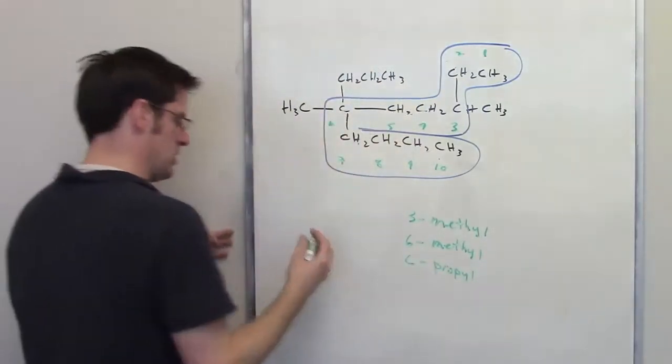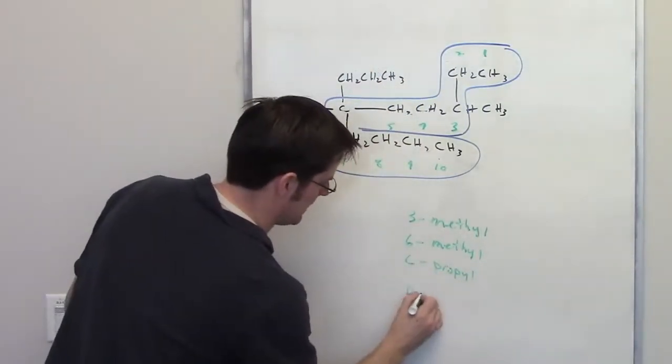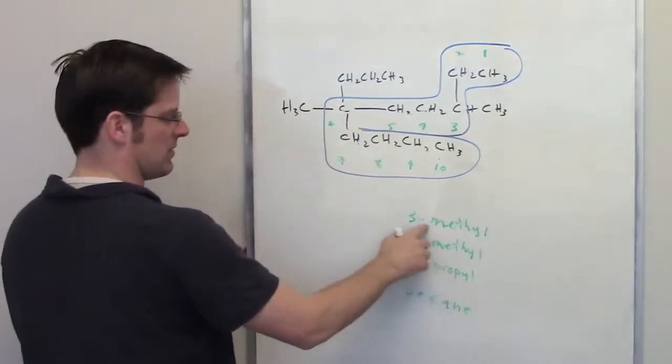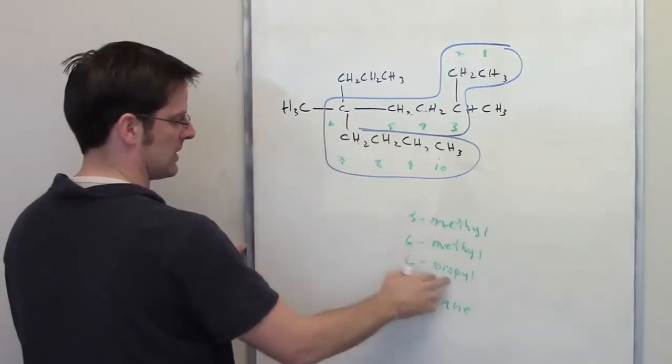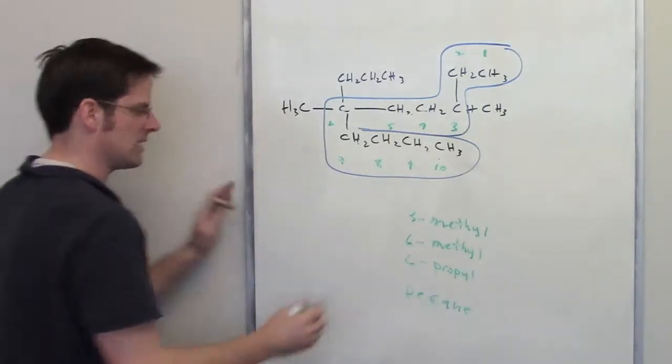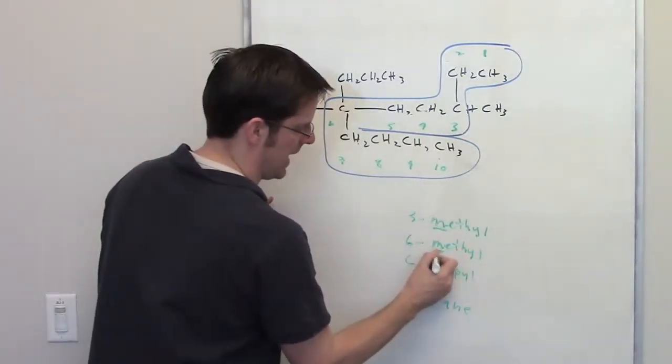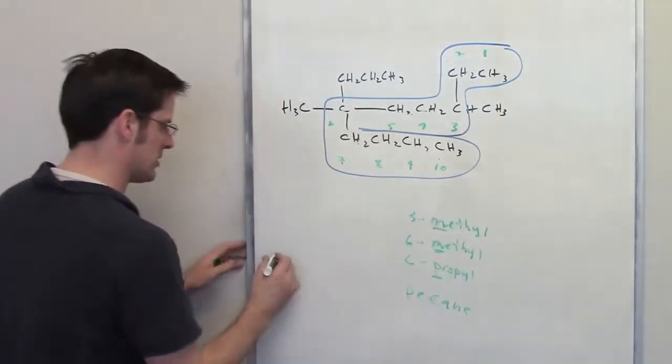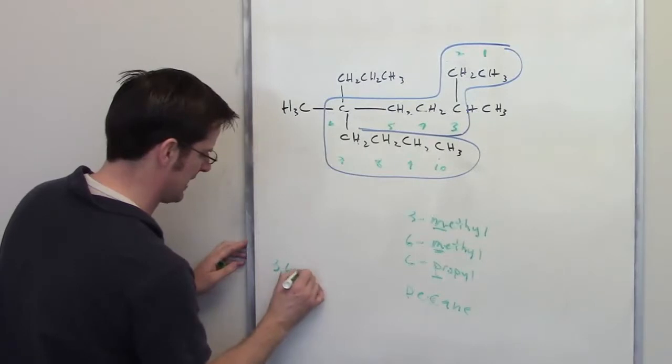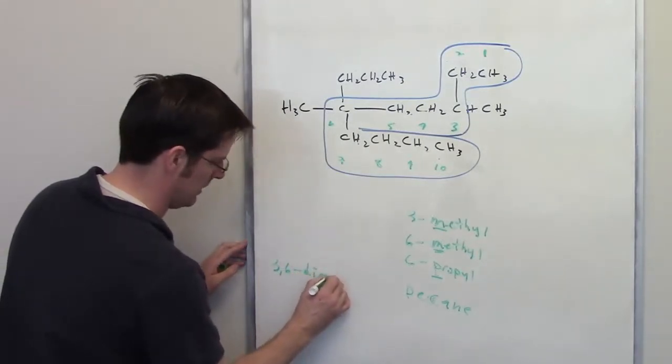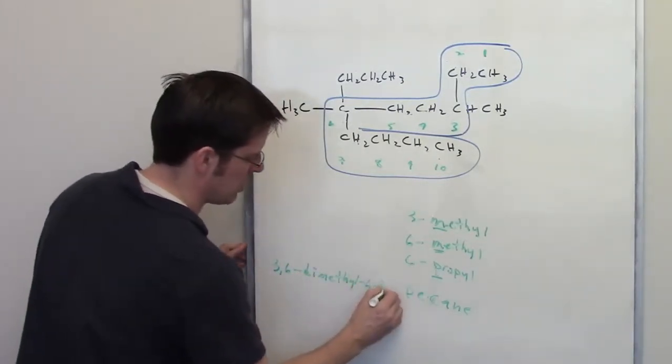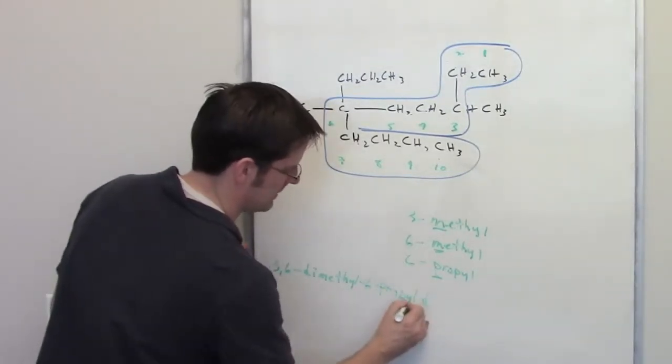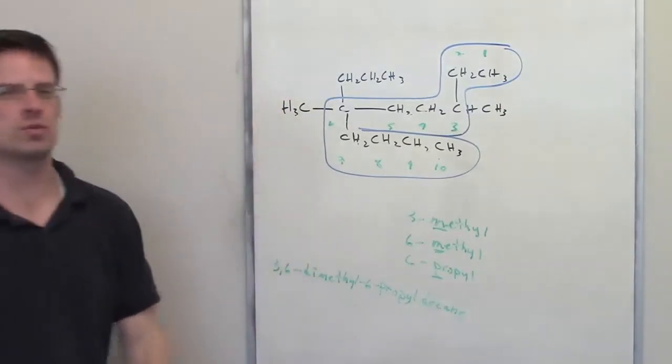Based then off of this molecule, which is, once again, a decane. I've got a methyl coming off of carbon 3, another methyl coming off of carbon 6, and a propyl coming off of carbon 6. I alphabetize them. M comes before the letter P in the English alphabet. And I can consolidate the methyls by just saying 3,6-dimethyl, and I'll put a hyphen, 6-propyl, decane. That will be the systematic IUPAC name for this structure.